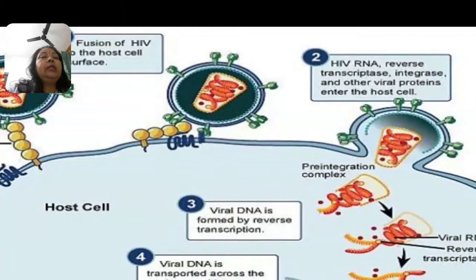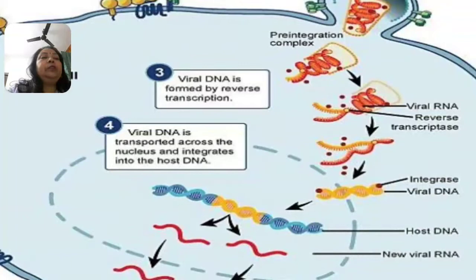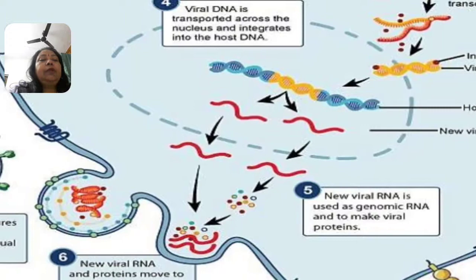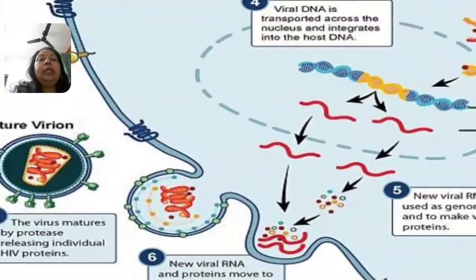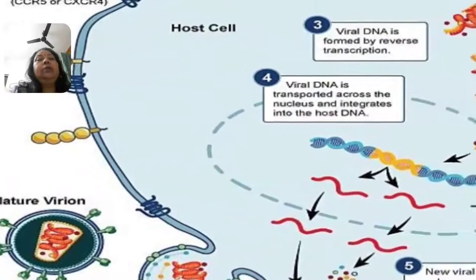The stepwise process of virus replication in the host cell: step one is fusion of the HIV virus to the host surface; step two, HIV RNA, reverse transcriptase, and other viral proteins enter the host cell; step three, viral RNA with reverse transcriptase forms integrated viral DNA, which enters the host DNA; step four, viral DNA is transported across the nucleus and integrates with host DNA; step five, new viral RNA is used as genomic RNA to make viral proteins. After this, new viral RNA and proteins move toward the cell surface, budding off as a mature virion that goes on to attack another host cell.